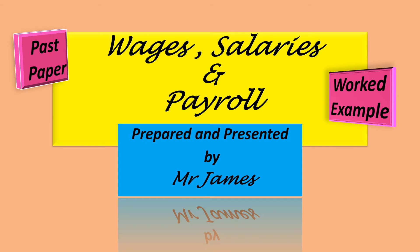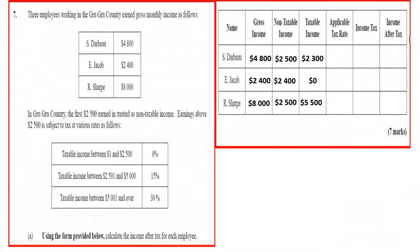Welcome to another Mr. James accounting tutorial. Today's topic is BJ's salaries and payroll. We will read what is required first: using the form provided below, calculate the income after tax for each employee. This is the form provided below, and they would like us to fill out this column here.